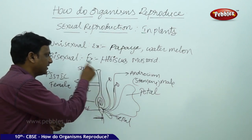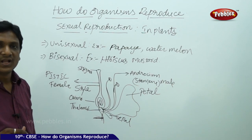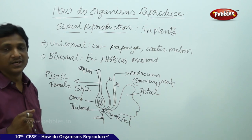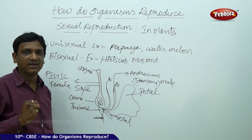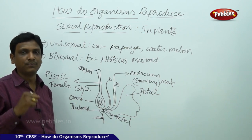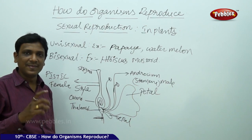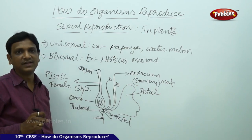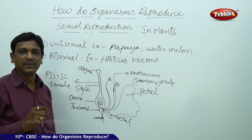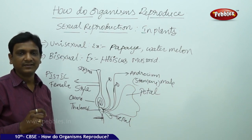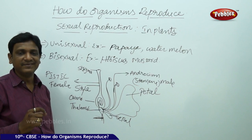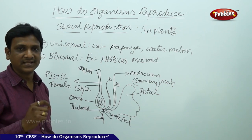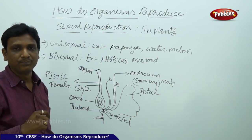This pollen has to travel from the anther to the stigma. This happens by various natural means — insects help in pollination. Many insects visit flowers for nectar; during this process, pollen sticks to their legs and is deposited on the stigmas of other flowers. Wind, water, and other natural agents also help in pollination. Pollination is the transfer of pollen from anther to stigma.